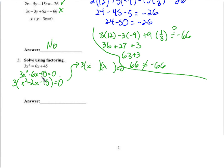I know my x times x is going to give me x squared. What's going to multiply to negative 15 and add to negative 2? So negative 5 and 3. Double checking — yes, that is working.